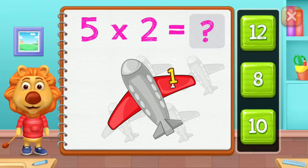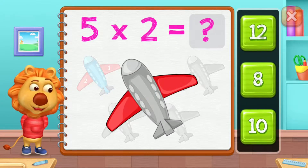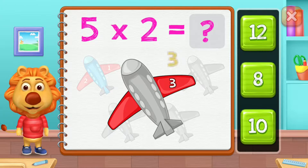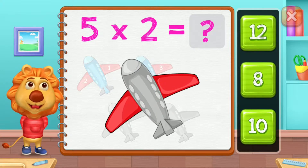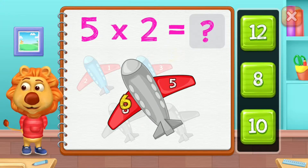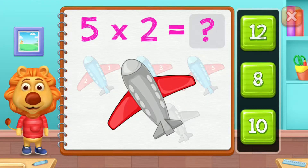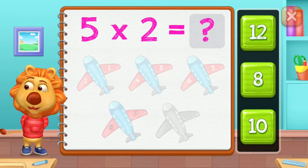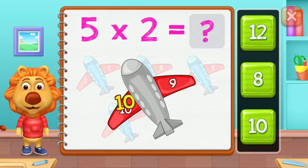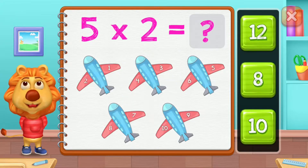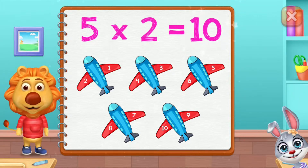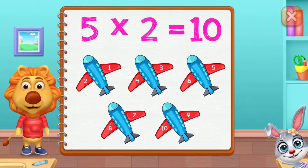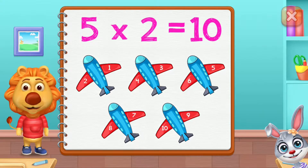One, two, three, four, five, six, seven, eight, nine, ten. Five groups of two equals ten!